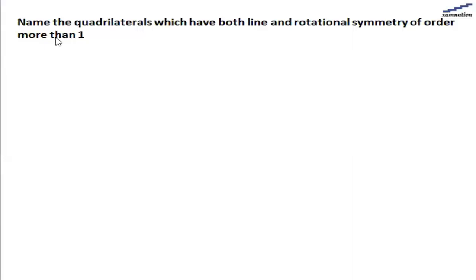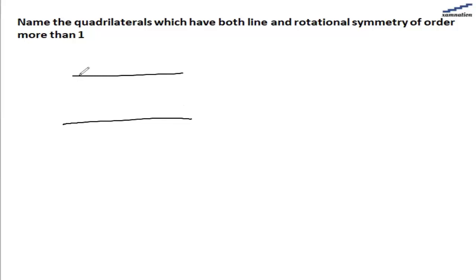In this portion, we are asked to find the figure which has both line symmetry and rotational symmetry of order more than one. One such figure is a rectangle.